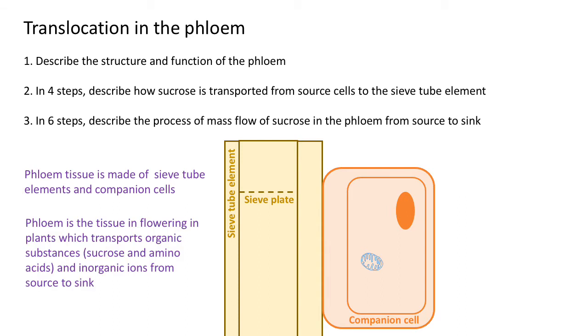The phloem is involved in transporting sucrose, amino acids, and organic ions from source to sink. Remember that the source can be above or below the sink, so it's not in one particular direction - it can go up and down the plant.